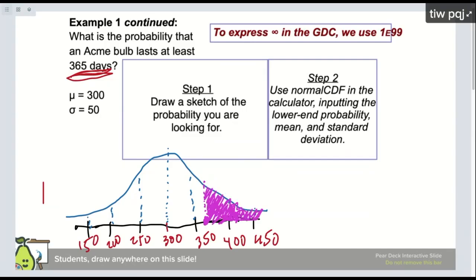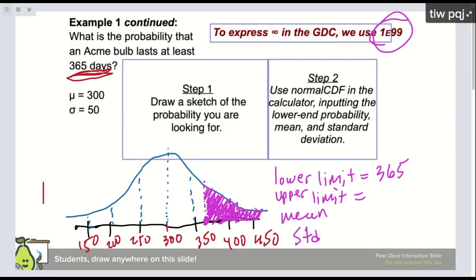So in my calculator, it wants me to do lower limit, upper limit, mean, and standard deviation. So here, my lower limit is at 365. Upper limit, that's this. We want to go to infinity because it goes all the way up to infinity. So for infinity, you can type in this in the calculator. I'll show you how to do that. And then the mean is right here, 300. Standard deviation - remember, they give it to you. They give you all that. That's 50. If you type that in the calculator, you will get the answer.